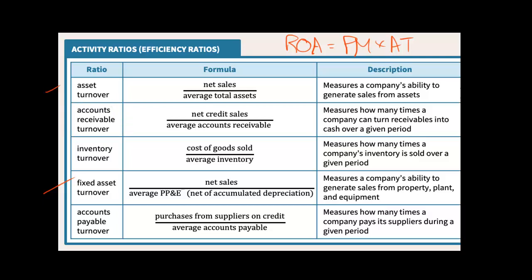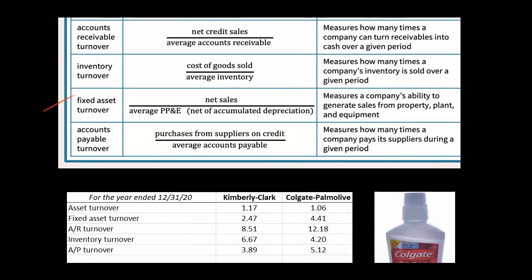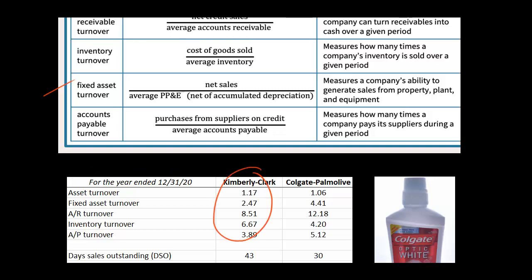I've done some annual analysis and comparisons for a couple of companies you might know — both consumer products companies: Kimberly-Clark and Colgate-Palmolive. I picked them because they're in the same industry, so the comparison is meaningful. The analysis covers the year ended December 31, 2020. Let's start with the asset turnover and fixed asset turnover.